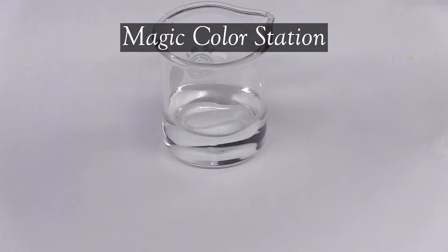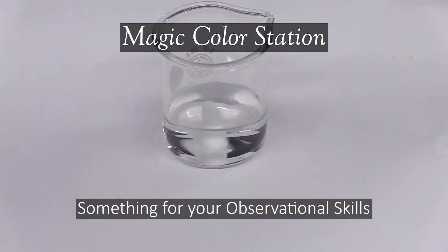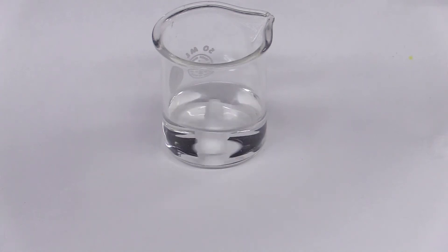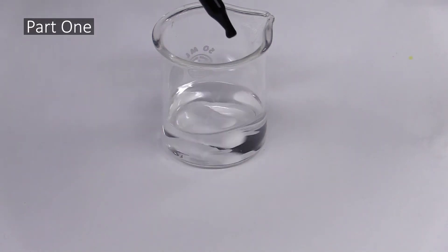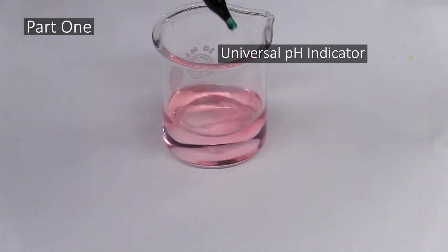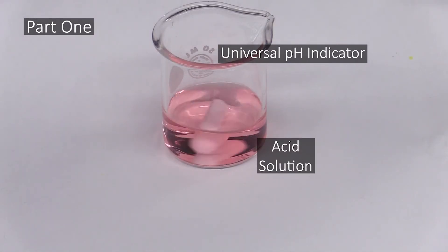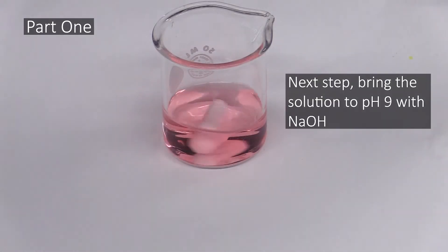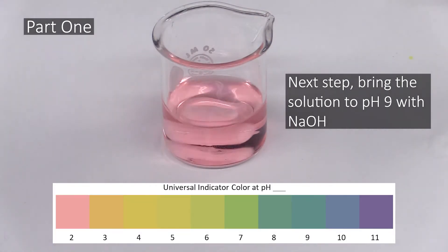Moving on to the magic color station. This one is somewhat unique in that there are no hypotheses to test here. It's mostly about honing your observational skills. This experiment will take place in two parts. In part one, you will first add a couple drops of universal indicator to a solution of acid. You'll then bring the solution's pH up to 9 by slowly adding sodium hydroxide solution to it. The indicator will tell you when you've reached the right pH by causing the solution to change to a certain color when it's at that pH.